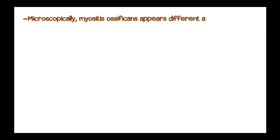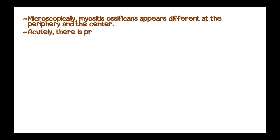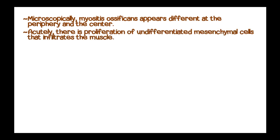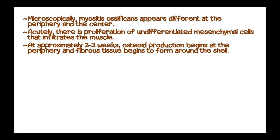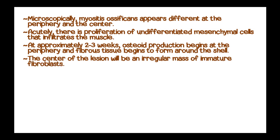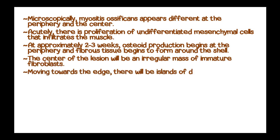Microscopically, myositis ossificans appears different at the periphery versus the center. Acutely, there is a proliferation of undifferentiated mesenchymal cells that infiltrate the muscle tissue. At approximately two to three weeks, osteoid production begins at the periphery and fibrous tissue begins to form around the shell. The center of the lesion contains an irregular mass of immature fibroblasts, while moving toward the edge there are islands of disorganized osteoid.